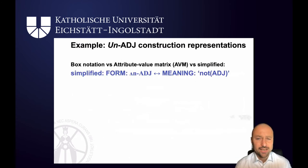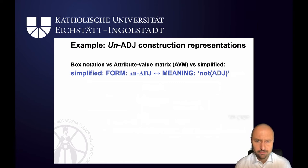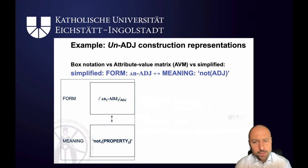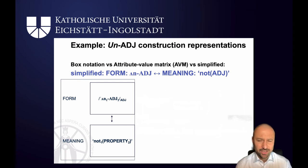So how can we put this into a constructional schema? In our simplified version we again have form as an attribute, and the value is 'un' — a string of sounds — followed by an adjective slot. This is linked to the meaning of 'not adjective', and the two are put together by a double arrow. This straightforwardly corresponds to the box notation that we already know. In the simplified version you've got it reading from left to right in a single line, and in the box notation you get a vertical representation of form and meaning.